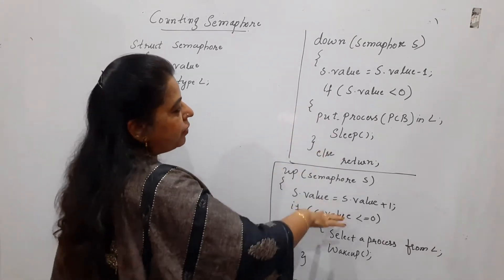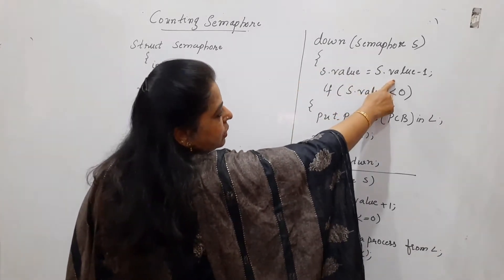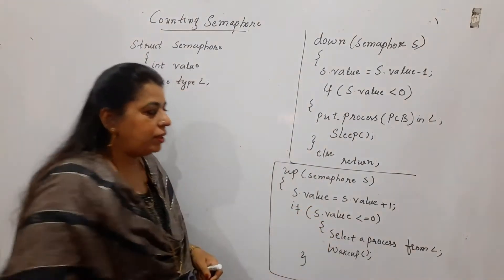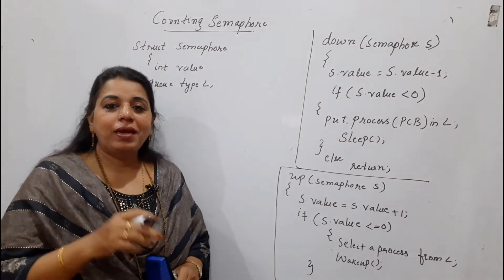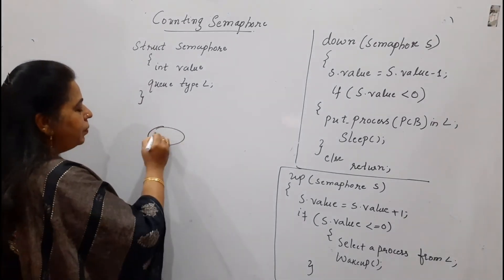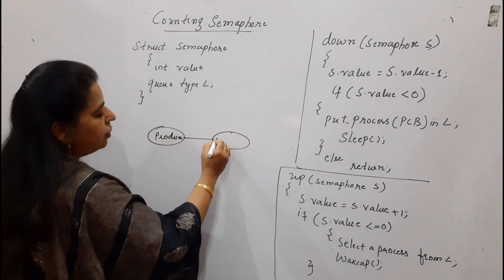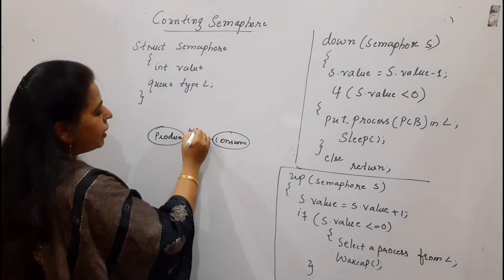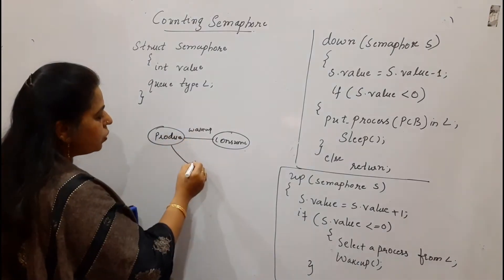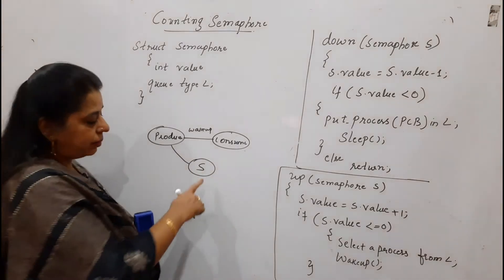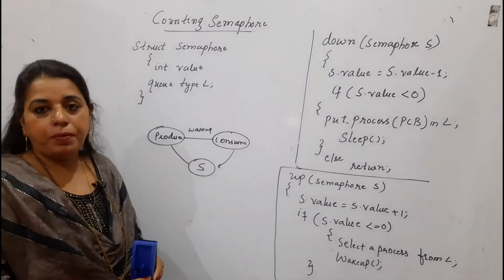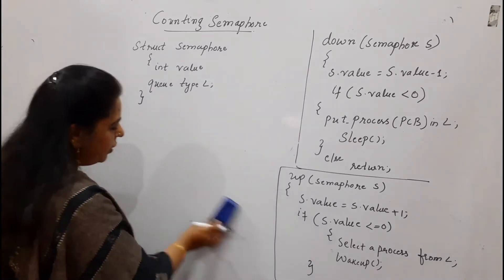If you see the difference in the down operation for the counting semaphore: first the value is decremented, then the condition is checked. In the up operation, first the value is incremented and then the condition is checked. In the previous session, I explained the sleep and wake concept, where two processes get blocked because both can enter into the sleep mode. The wake up signals were getting lost — the consumer was not receiving them. Now, if we have a mechanism to store the wake up signals in a semaphore variable, the consumer can always check the semaphore value before it goes into sleep mode. We will look at this with an example.